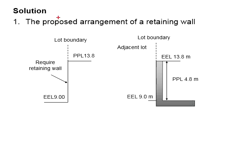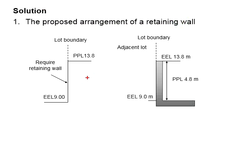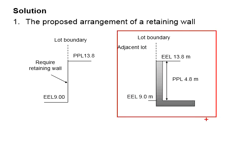First, propose arrangement of the retaining wall. The lot boundary is here. The adjacent lot has the elevation lower than your construction site. In this case, you can utilize the backfill of the soil in helping you in terms of the stability of the retaining wall. With that, the retaining wall may be arranged in this manner.